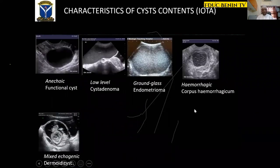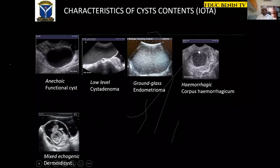IOTA also classifies cyst contents into five: anechoic, low-level echoes, ground glass, hemorrhagic, and mixed echogenic. Anechoic content is seen in follicular cysts — clear content with thin wall and very good sound transmission. Low-level echoes are seen in mucinous cysts. Ground glass appearance is when the content is closely packed together — this is commonly seen in endometrioma. Hemorrhagic cysts have varying contents depending on the age of the hemorrhage. Mixed echogenicity is seen in dermoid cysts.